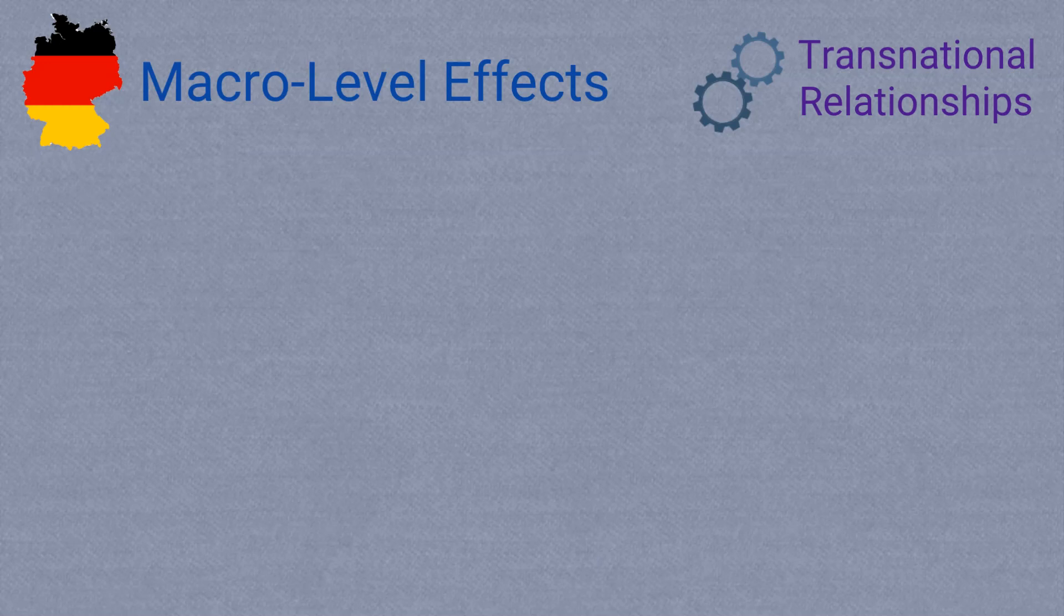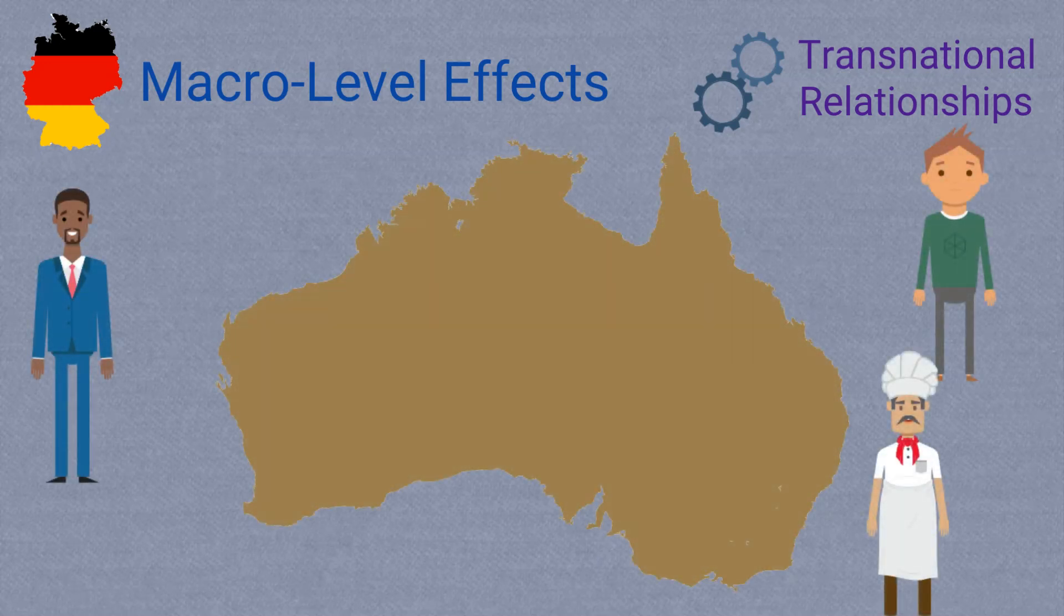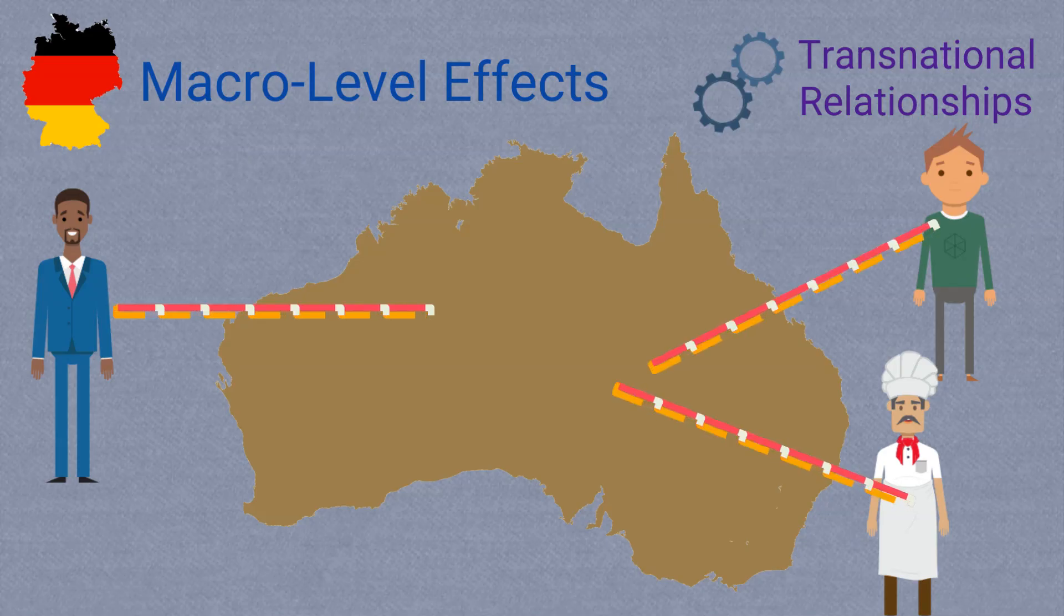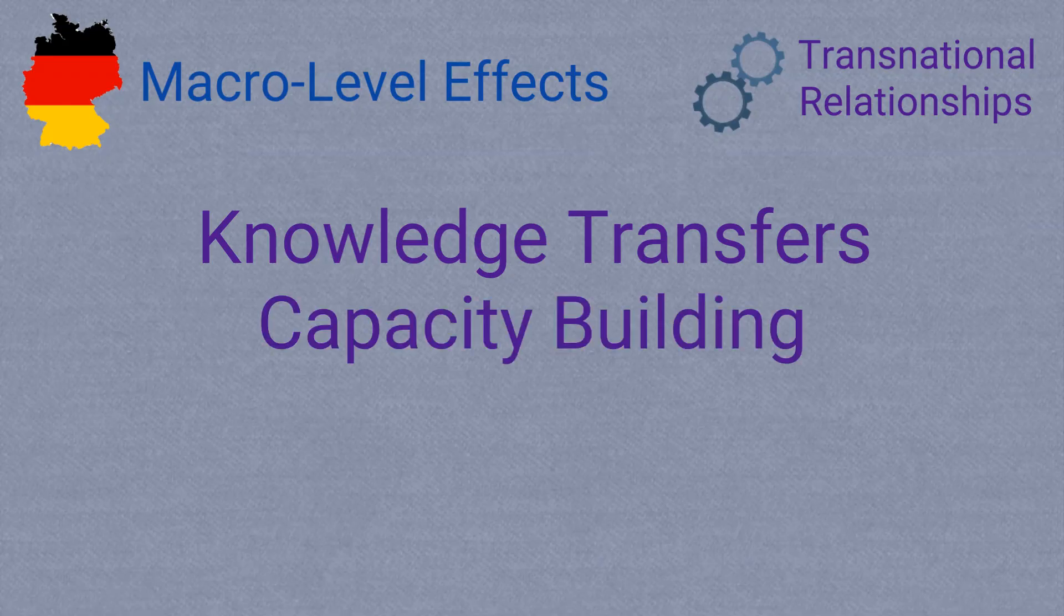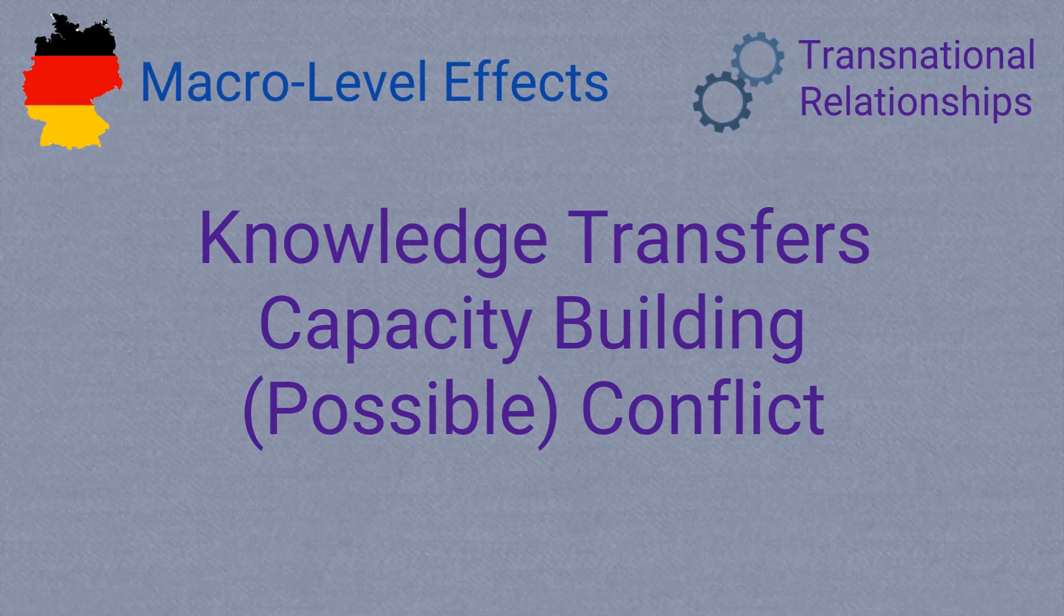Finally, origin countries often see effects resulting from transnational ties. That is, the relationship origin states maintain with their emigrant populations can result in knowledge sharing, capacity building, or even in some cases conflicts between the populations and destination and origin locations. Be sure to check out my explainer video on diasporas for more on this topic.